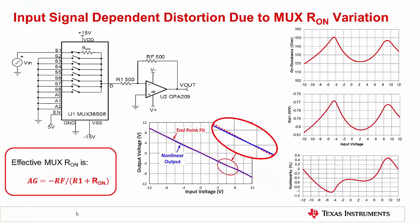This example intentionally uses small gain-setting resistors to make the non-linearity and gain error more prominent. However, in a circuit where current flows through the multiplexer, the ON resistance will introduce gain and non-linearity errors. In the next slide, we will see how the gain and non-linearity errors can be avoided using a buffer amplifier.